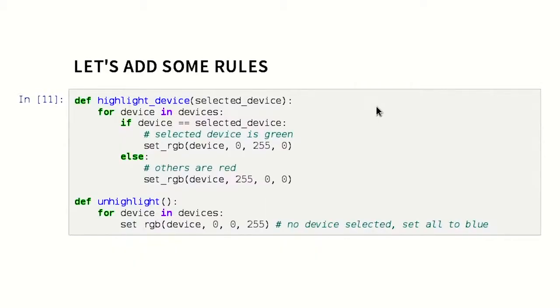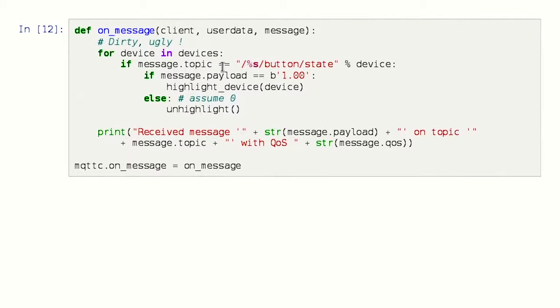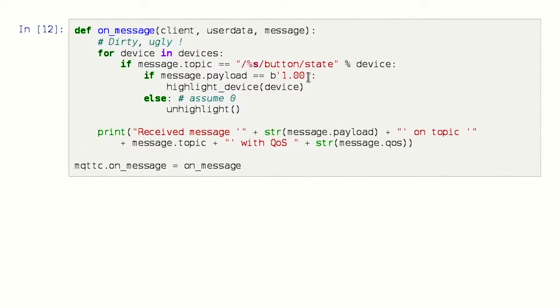We can also add rules. For example, if we want to highlight a device, it means the selected device will be in green and the others will be in red. On highlight, you put all the devices in blue first — 255 in blue — then the selected one goes green. Here is my rule: I check if the message topic is slash my node slash button slash state. Those devices send this kind of message on the MQTT broker. We highlight this device, and if we receive a zero — meaning the button has been released — we un-highlight everybody.